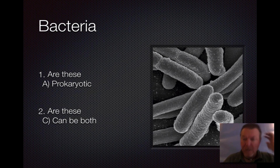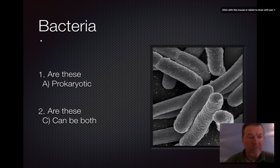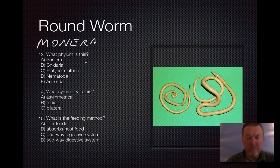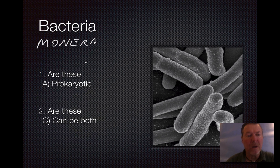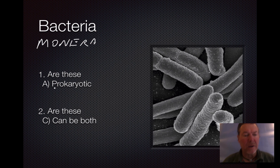Okay, let's see how you did. This is Kingdom Monera. These are prokaryotic organisms — think of the prefix 'pro' as meaning 'pre.' These are organisms that have no membrane-bound organelles.